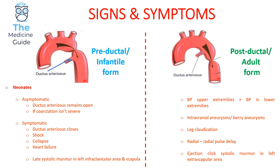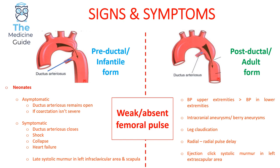To clarify, post-ductal aortic coarctation is found classically in adults. A very classic sign in both the infantile and adult forms is a weak or absent femoral pulse. In your SBA, if it states anywhere that a patient — regardless of age — presents with a weak or absent femoral pulse, that should immediately make you think of aortic coarctation. It is a very classic, high yield sign.